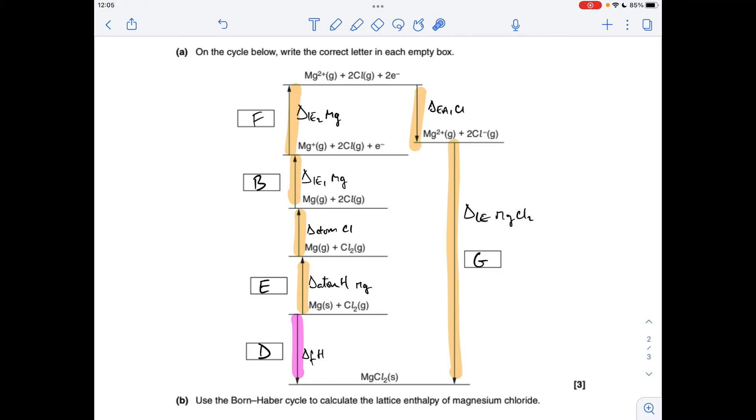And then we've got the complicated route going through all these steps. But again, it's starting at the element and it's finishing at the lattice. And Hess's law says that the sum of the enthalpy changes in each route equal each other.